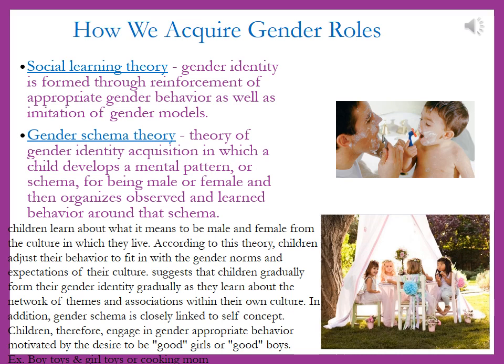Generally speaking, sociologists believe that there are two ways in which people acquire gender roles: the social learning theory and the gender schema theory. According to the social learning theory, gender identity is formed through the reinforcement of appropriate gender behavior as well as imitation of gender models. An example of this might be if you see a child fall down and skim their knee — if it's a little boy, often times the parents will pick him back up and dust him off and tell him to stop crying and be a man.